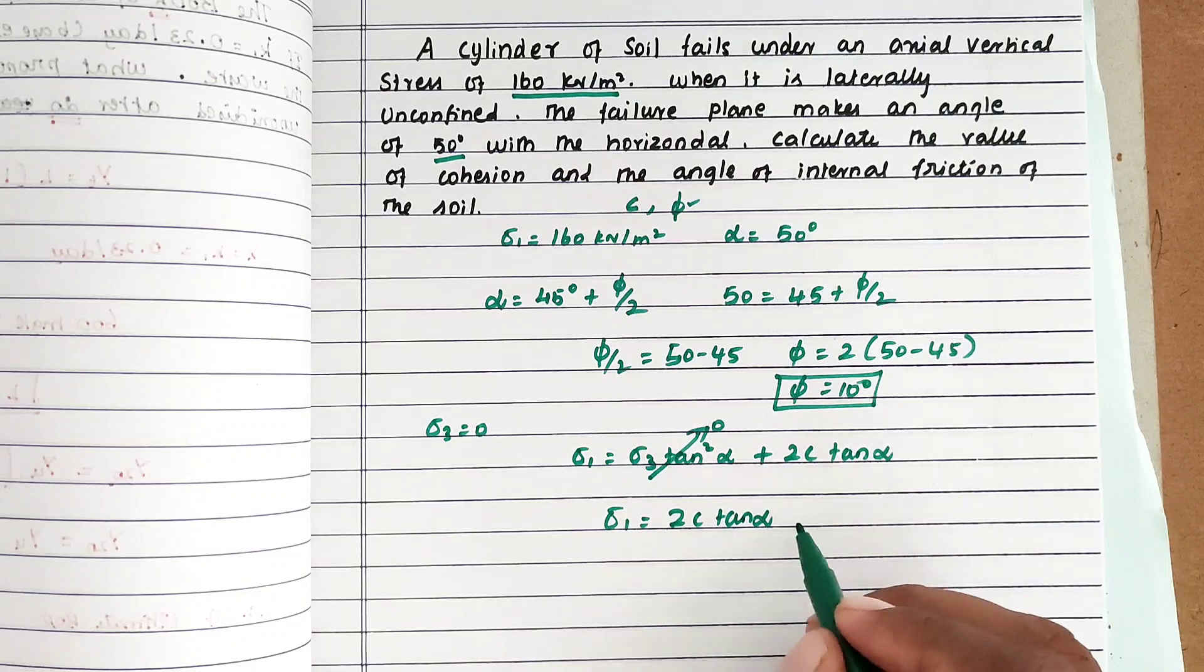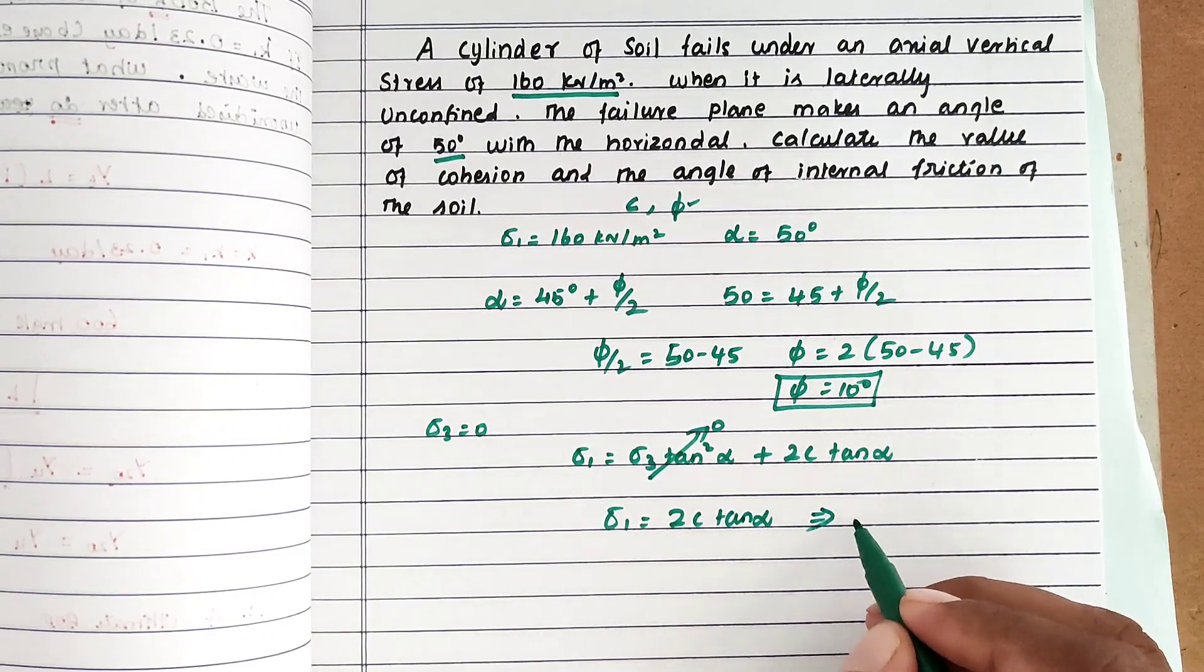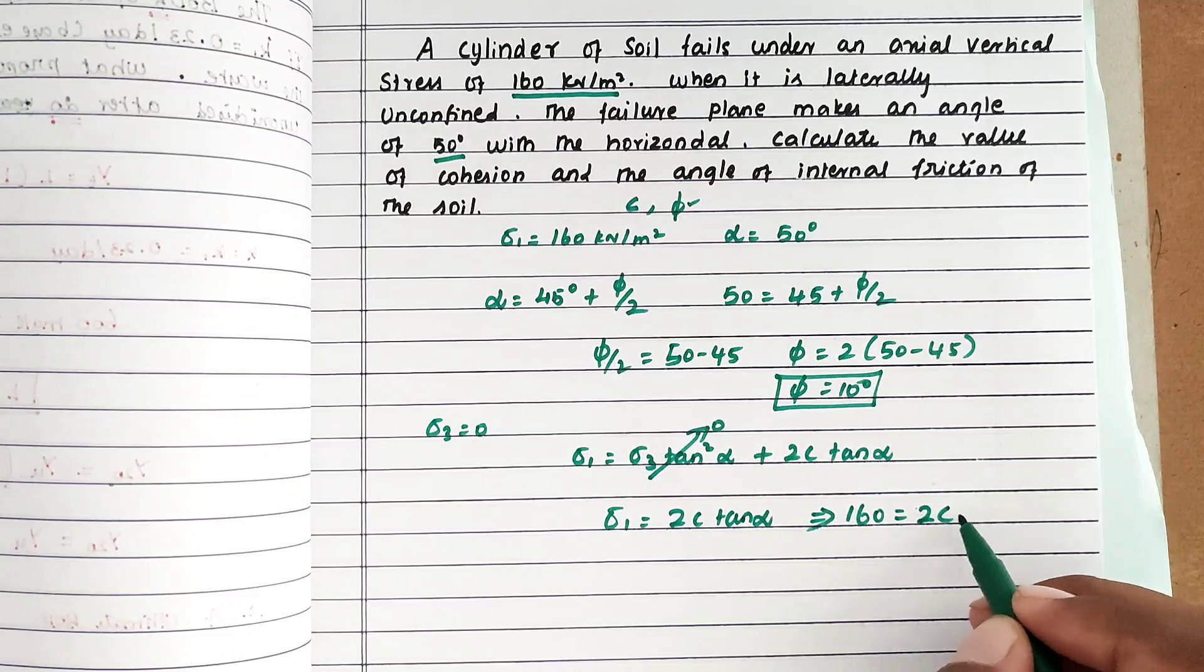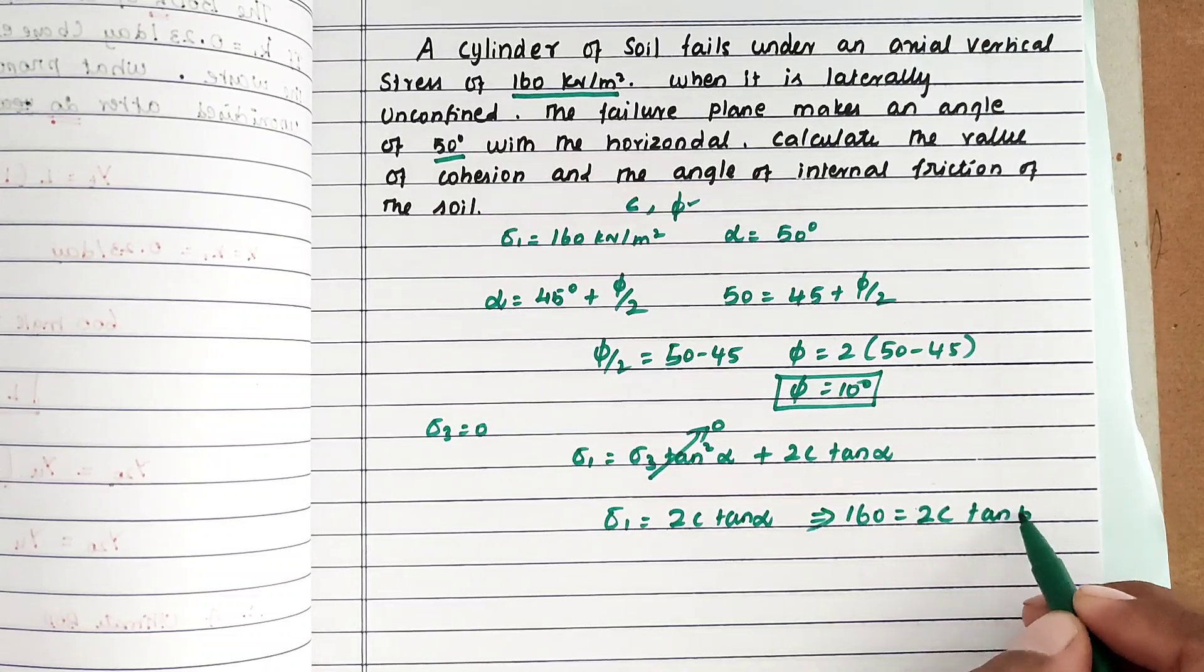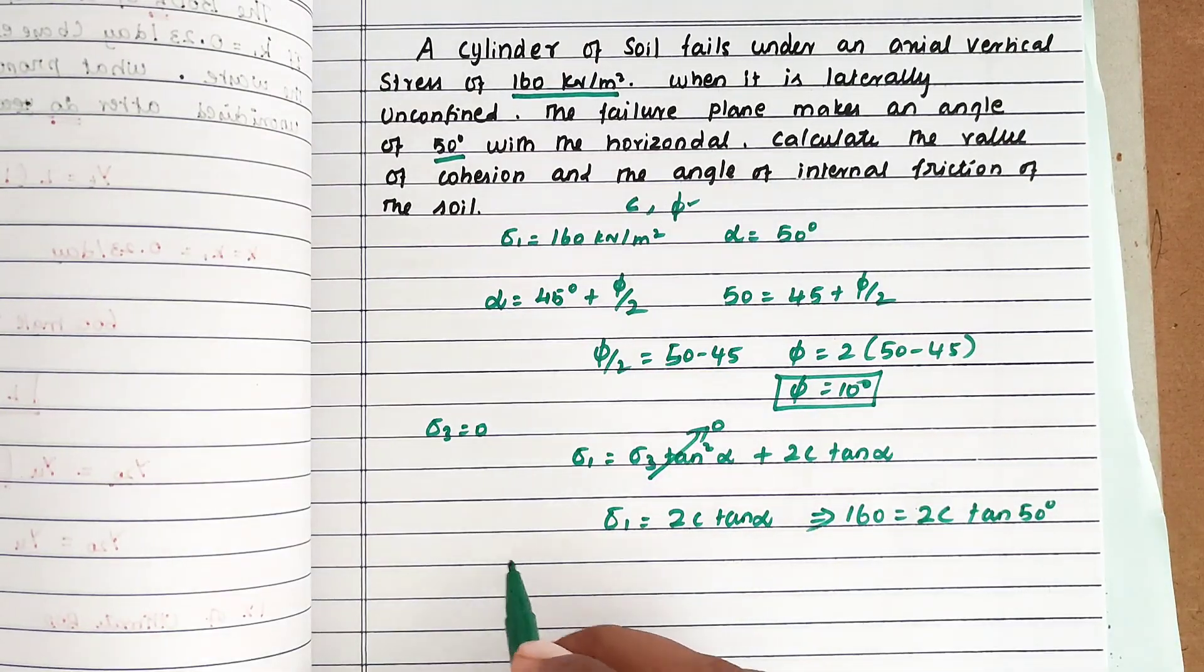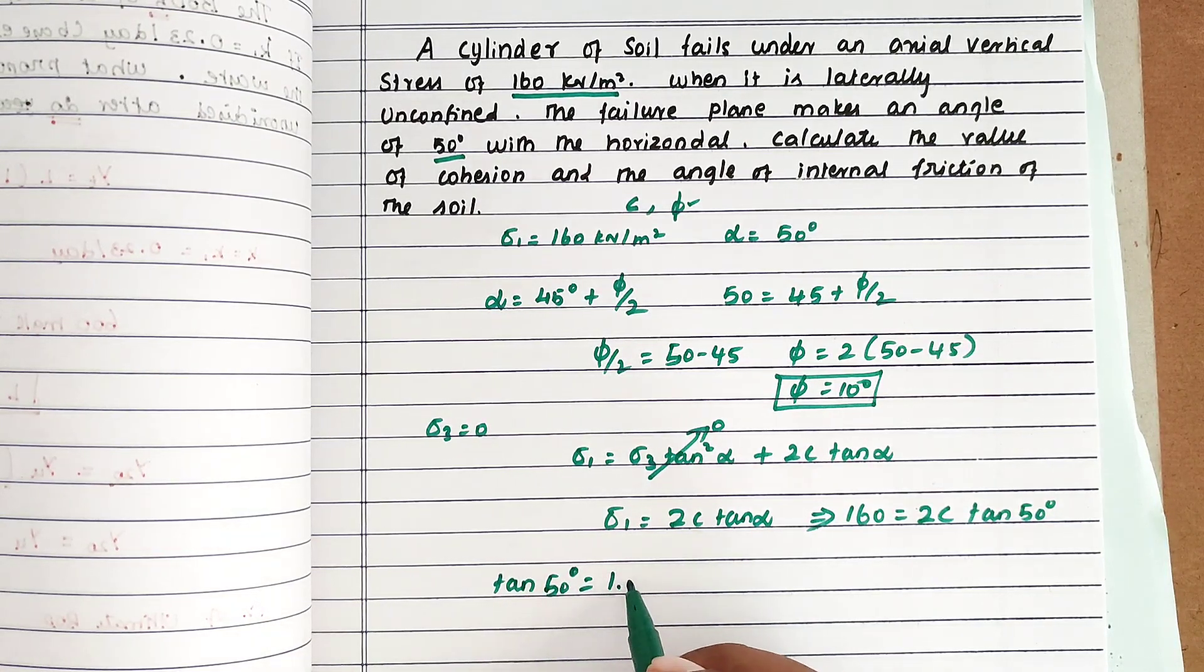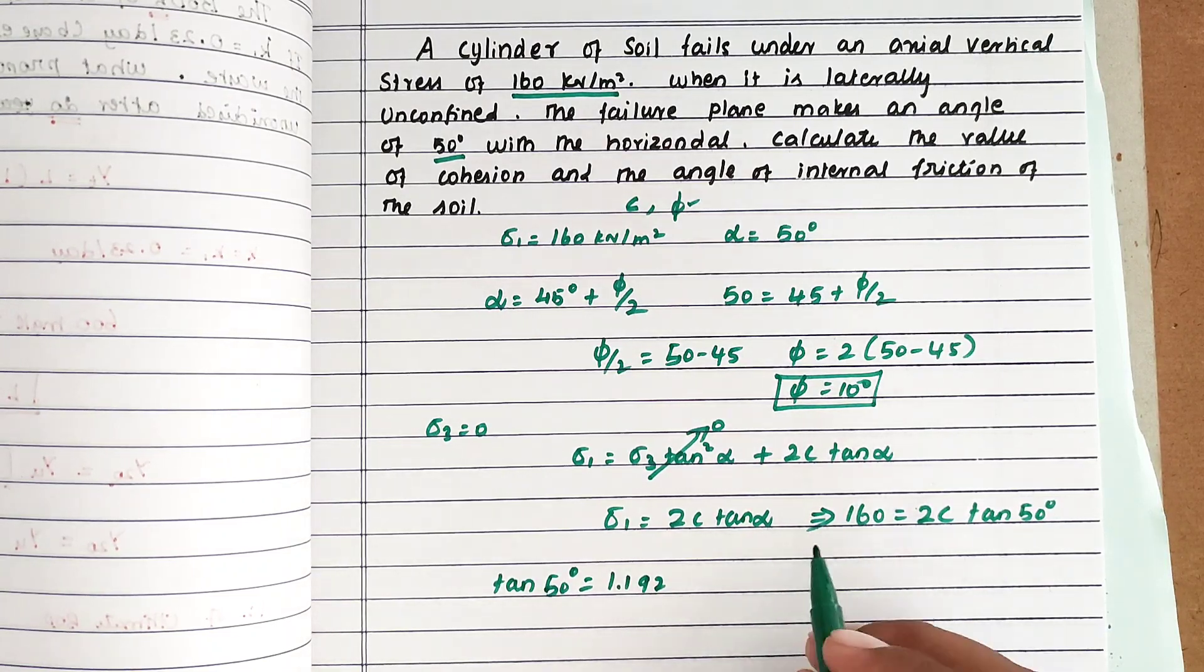Now we can substitute all the values. Sigma 1 is 160 equals 2 times c times tan alpha, where alpha is 50 degrees. Tan 50 degrees equals 1.192.